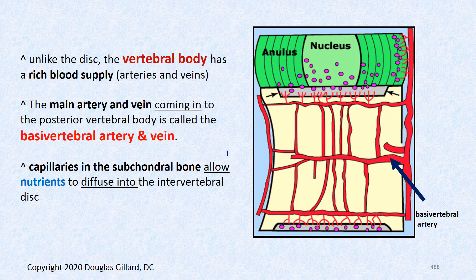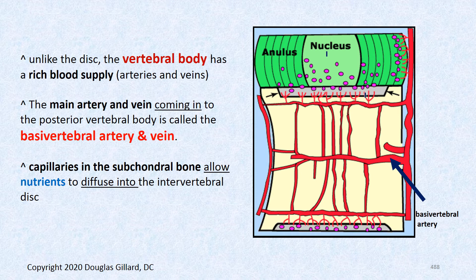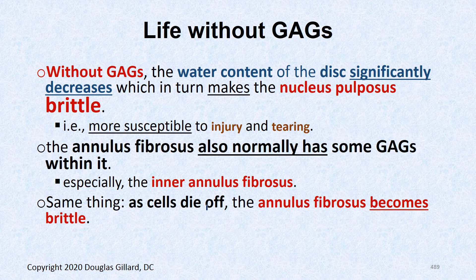As cells die, the concentration of GAGs and therefore proteoglycans decreases, which can lead to chronic pain. Unlike the disc, the vertebral body has a very rich blood and nerve supply via the basivertebral arteries. The nucleus gets its nutrition through diffusion from bony endplates via marrow channels — usually at night during negative pressure, the diurnal change. Without GAGs, water content significantly decreases, making both nucleus pulposus and annulus fibrosus brittle and prone to injury, especially torsion injuries.